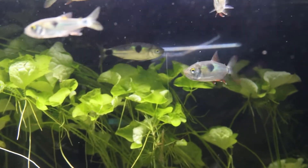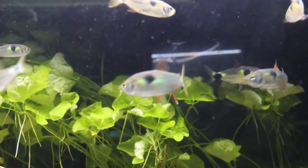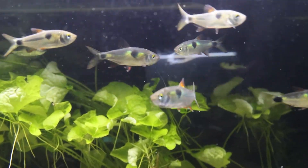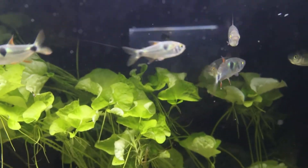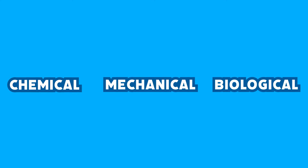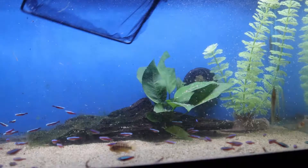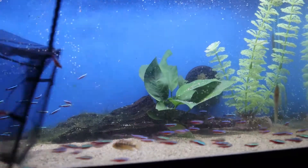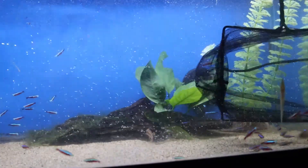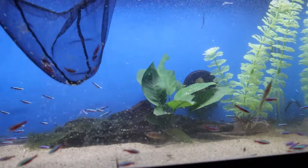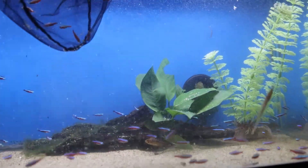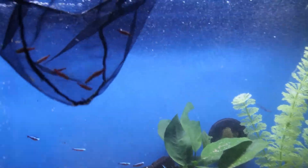It is important to note that without filtration media, filters are essentially just big glorified water movers. There are three different types of filtration, and all filter medias use at least one type. These types of filtration are chemical, mechanical, and biological, which we'll explain here. Have you ever used a fishnet? Water can freely pass through the net, but fish or other solid objects are trapped inside. That's mechanical filtration.